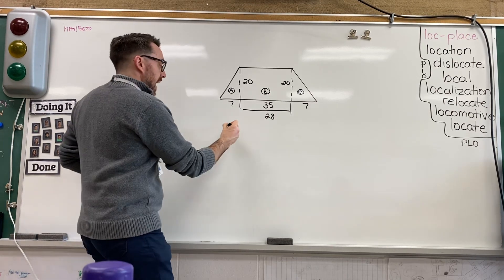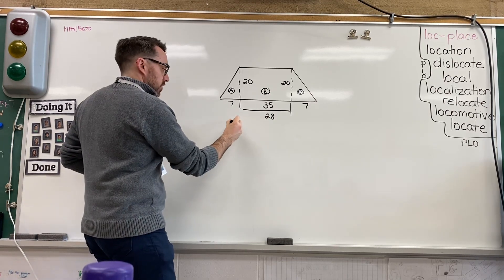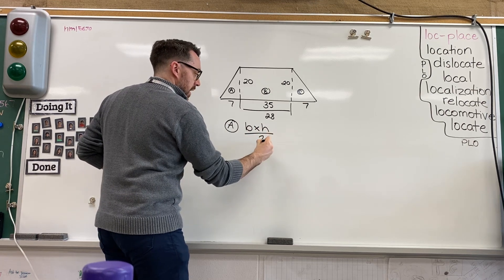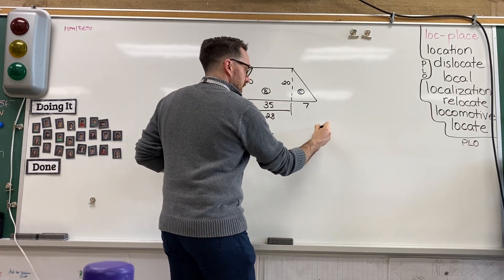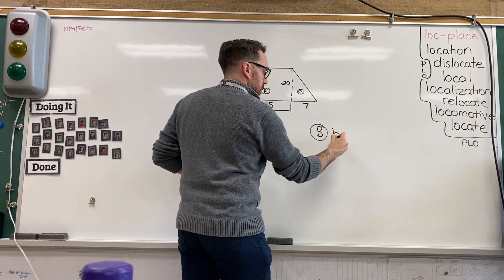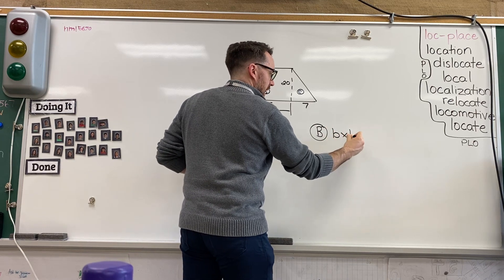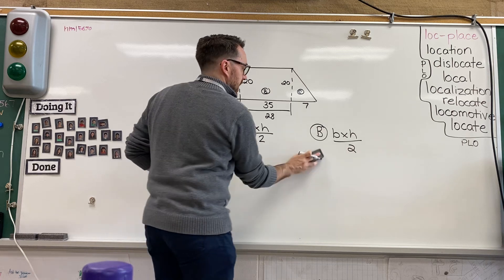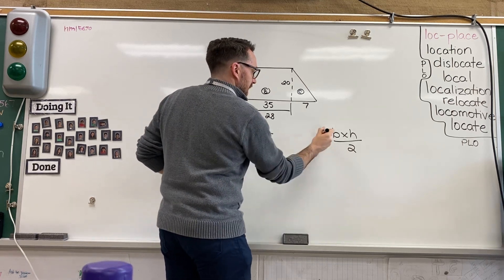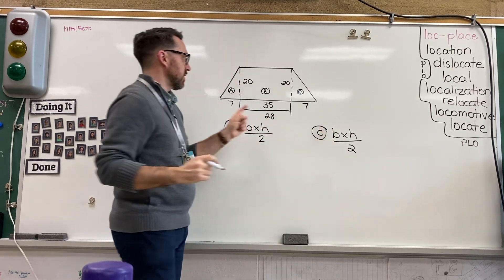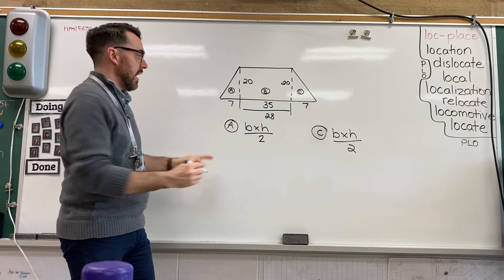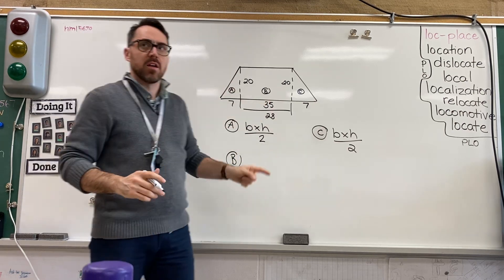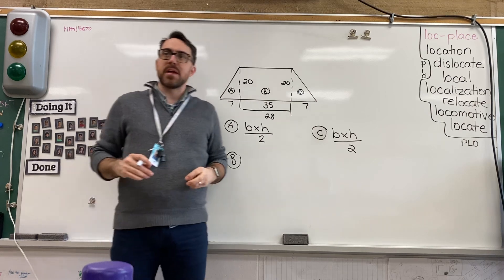So here's what I know. A is a triangle, so it's base times height divided by 2. C is the same as A. And then B — what shape is B? What shape is B?